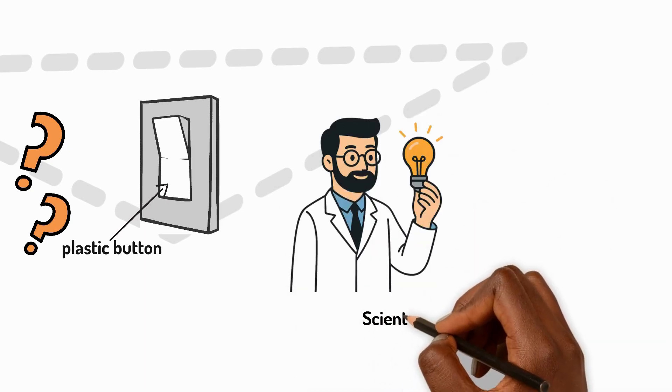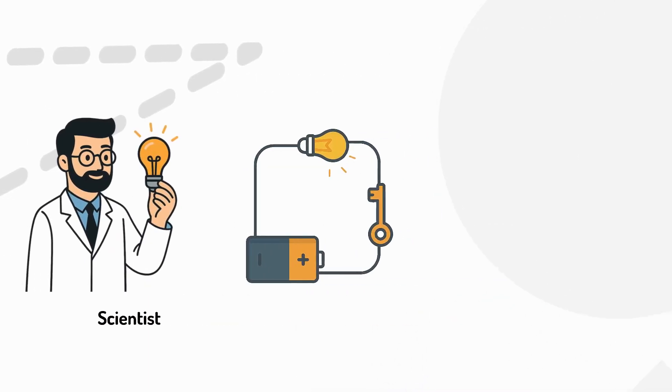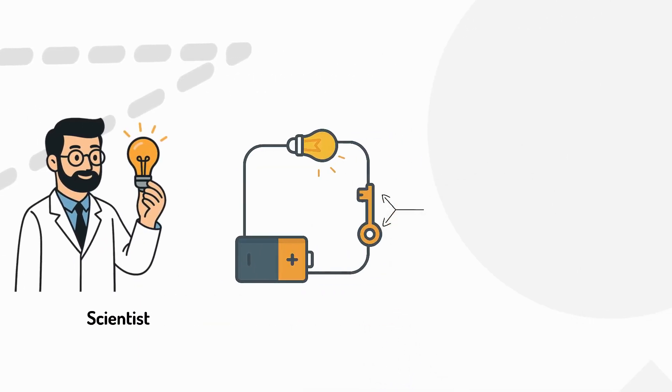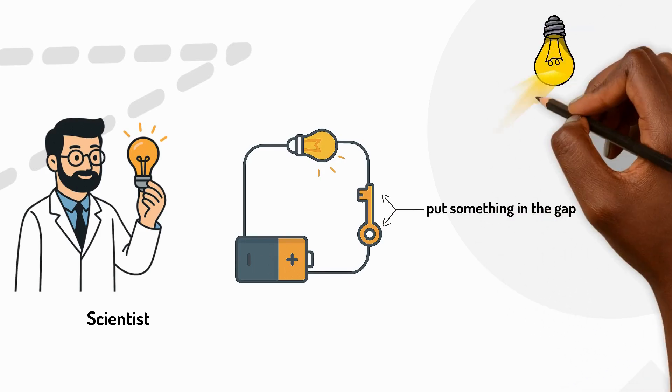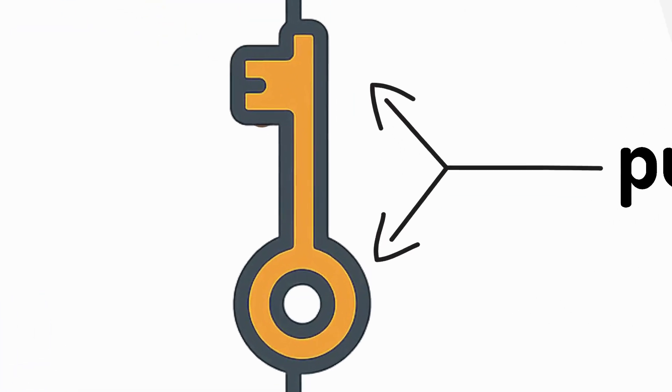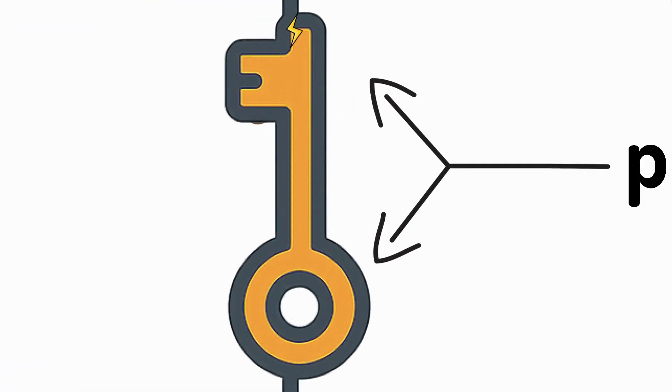Scientists test materials using a simple circuit with a gap. If we put something in the gap and the bulb lights up, electricity must be flowing through that material.